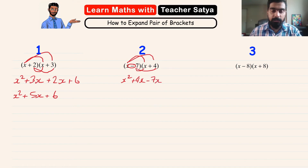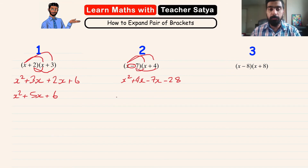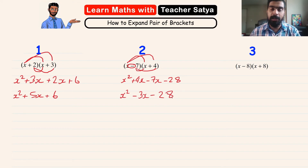Negative 7 multiplied by 4 gives us negative 28. 4x and negative 7x are like terms, so the final answer is x squared minus 3x minus 28.